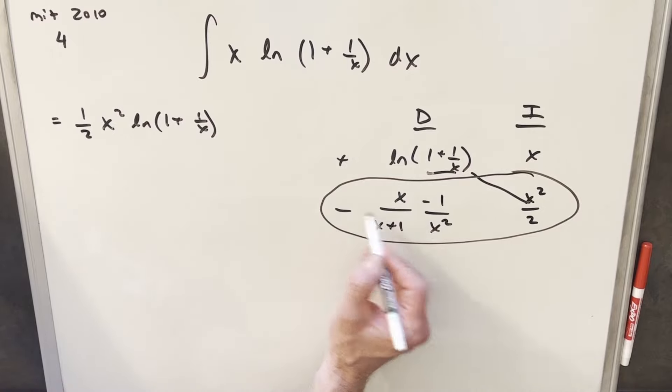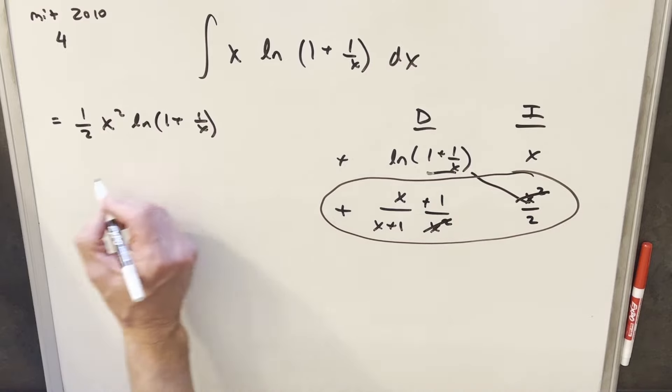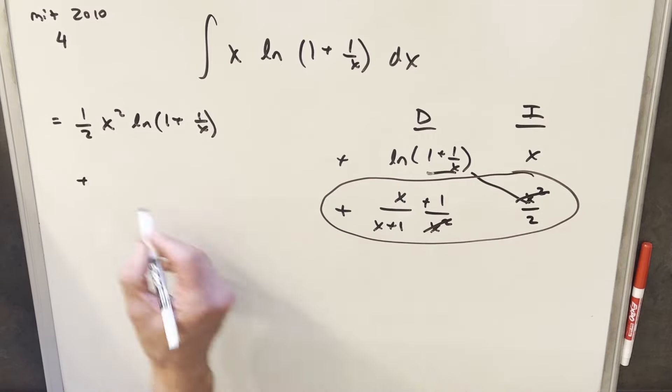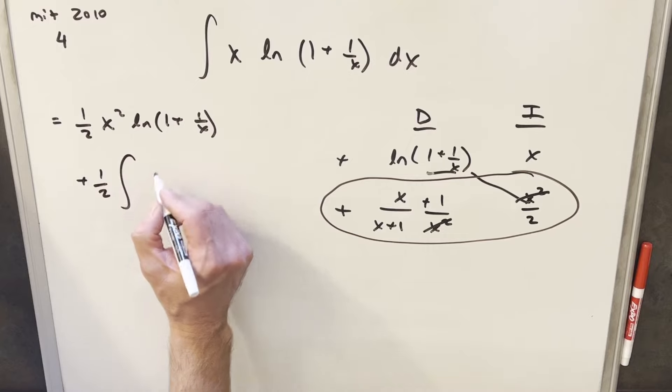And I notice, minus times minus, this is just going to be a plus, and our x squareds are going to cancel here. So when I rewrite this and write it down here, I'm going to bring this 2 out front as a 1 half. And so we're just integrating x over x plus 1.